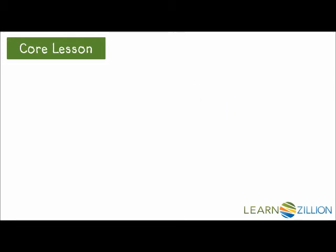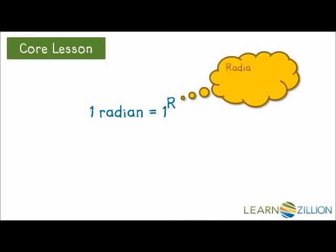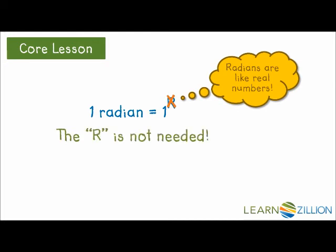In some textbooks, when radians are first introduced, an r is used to indicate radians rather than degrees. And the r is written where the little circle would go if the angle was expressed in degrees. However, we usually think of radians as real numbers, and so the r is dropped. In other words, the r is simply not needed.